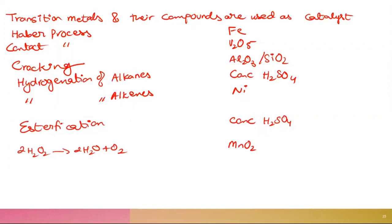In the Haber process, iron is used as a catalyst. In the contact process, V2O5 is used. In cracking, Al2O3 is used. For hydrogenation of alkenes, concentrated H2SO4 is used. For decomposition of hydrogen peroxide, MnO2 is used to produce O2.